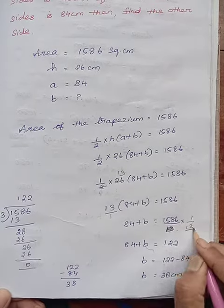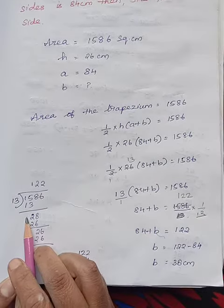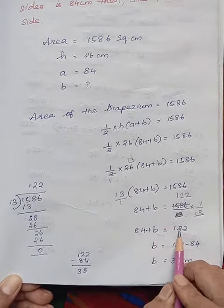So 13 divides this number 122 times. So 84+b equals 122.